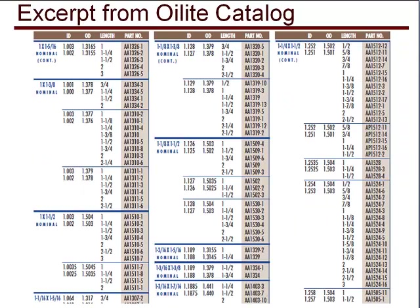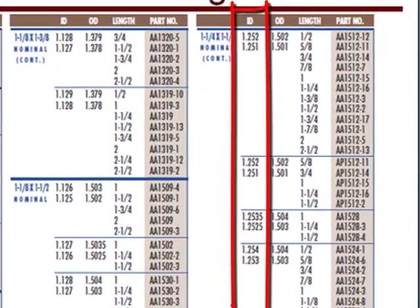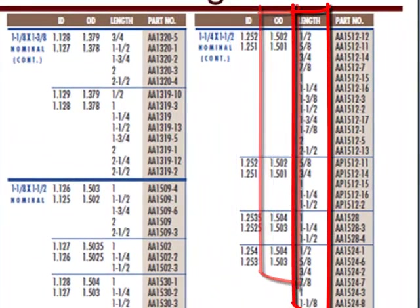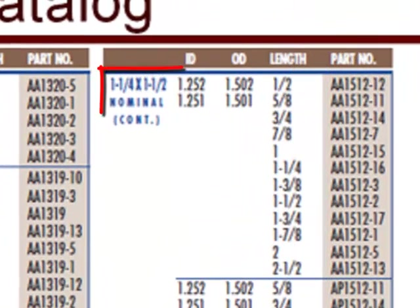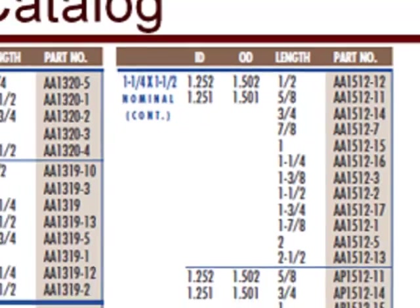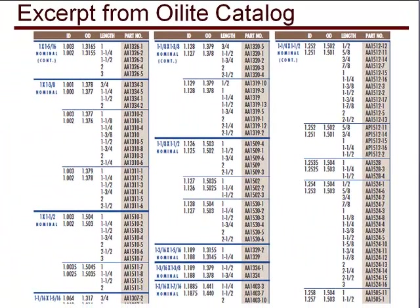In a typical bearing catalog, there are many choices for ID size, OD size, and length for a nominal size of bearing, as you can see from this excerpt from the oil light catalog. Now, it would be helpful then for us to have some kind of design equations that would zero in on the type of bearing we need and also the size of bearing that we need.